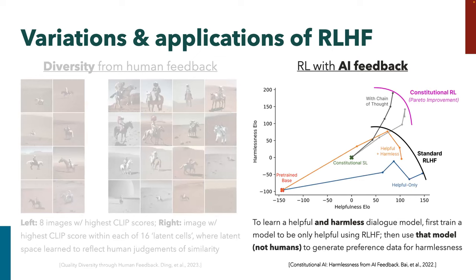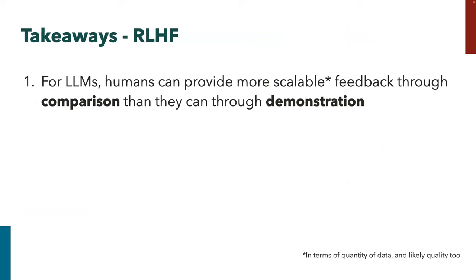Another neat variation is RL from AI feedback, which is how Claude works — Anthropic's offering in the chatbot space. The idea is we want dialogue models that are not just helpful but also have guardrails; we don't want them to tell you how to do bad things. One way is to ask humans which response is more harmful. But another approach: do the normal RLHF thing with just helpfulness data, then use the resulting model to provide the harmlessness annotations instead of humans, and this actually works.